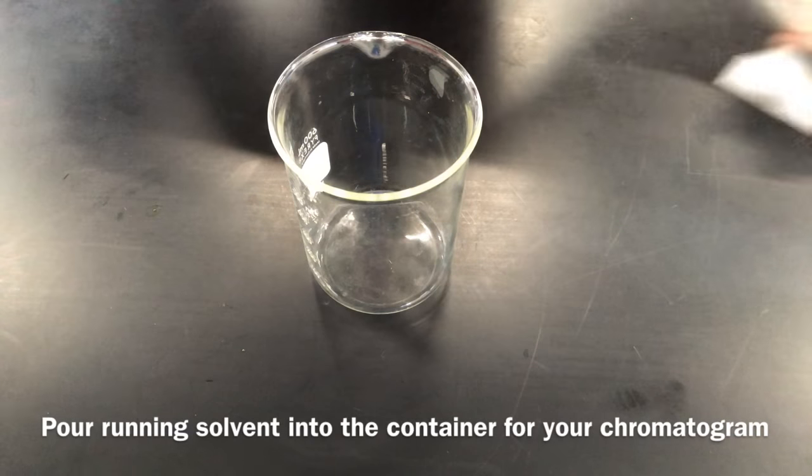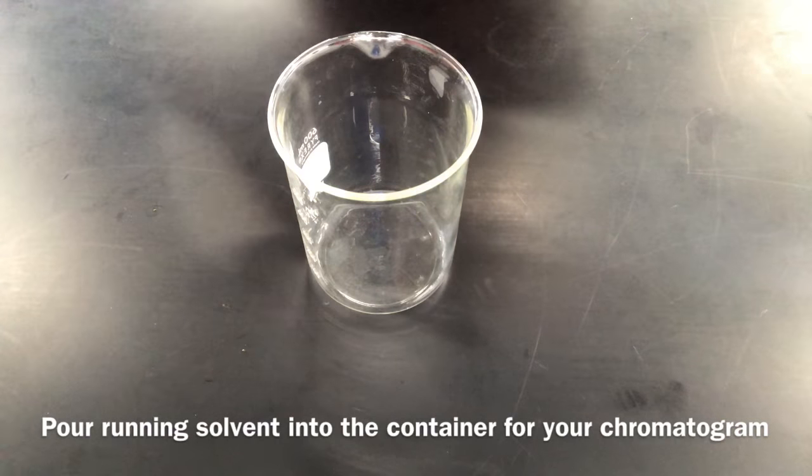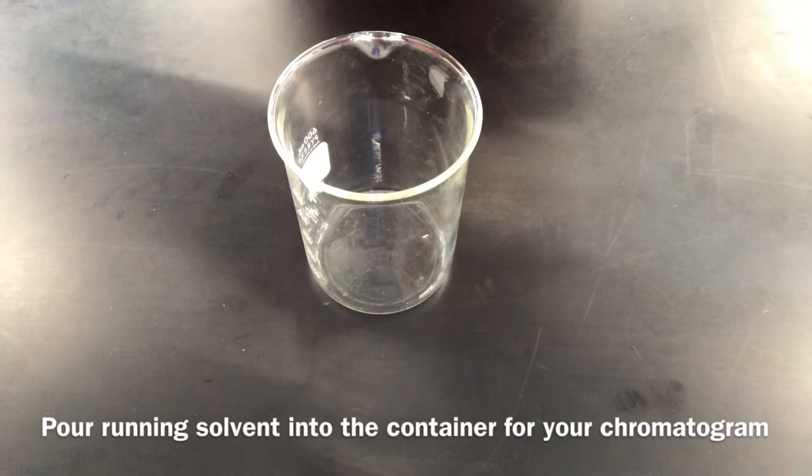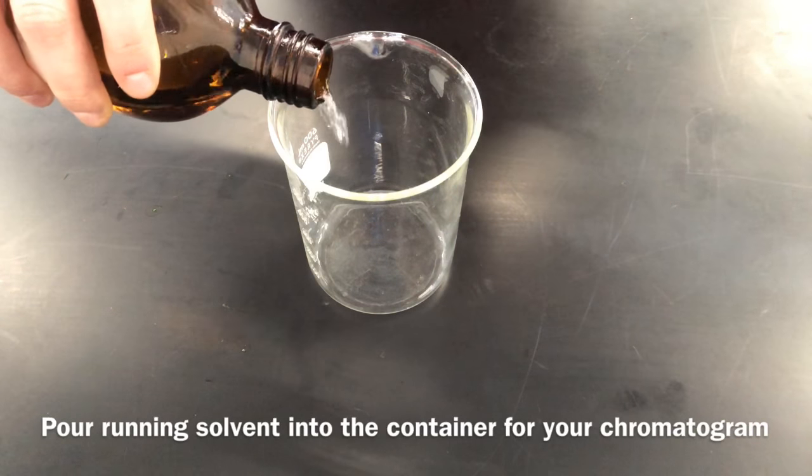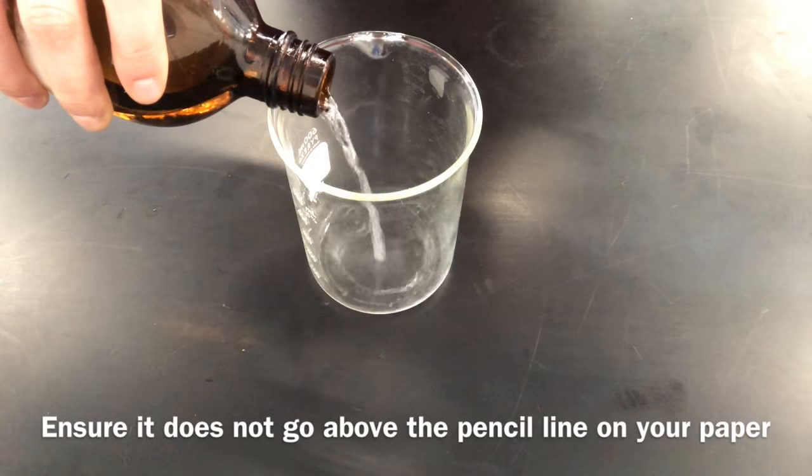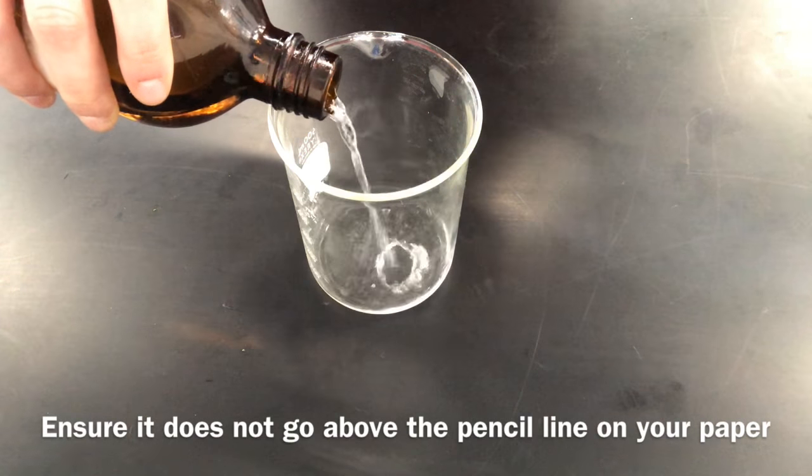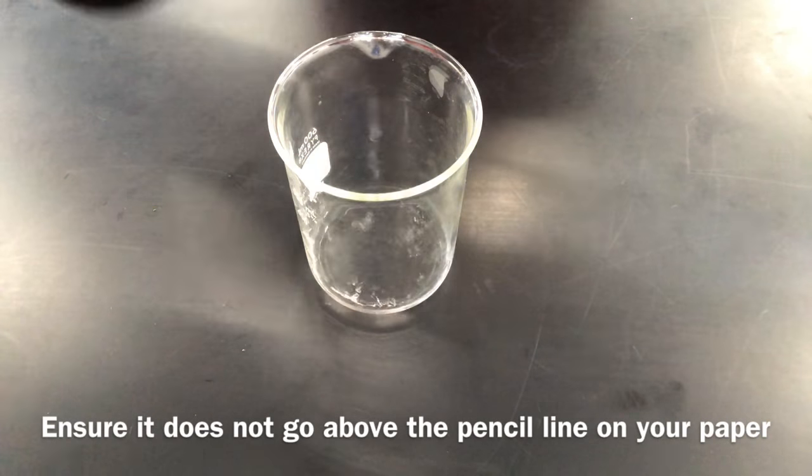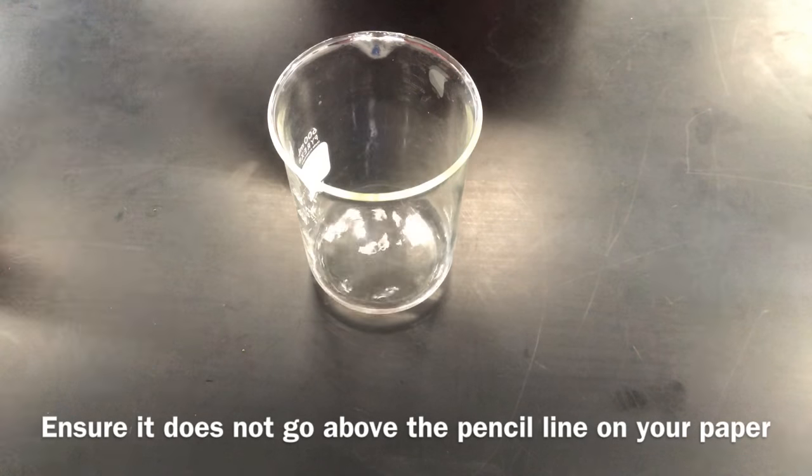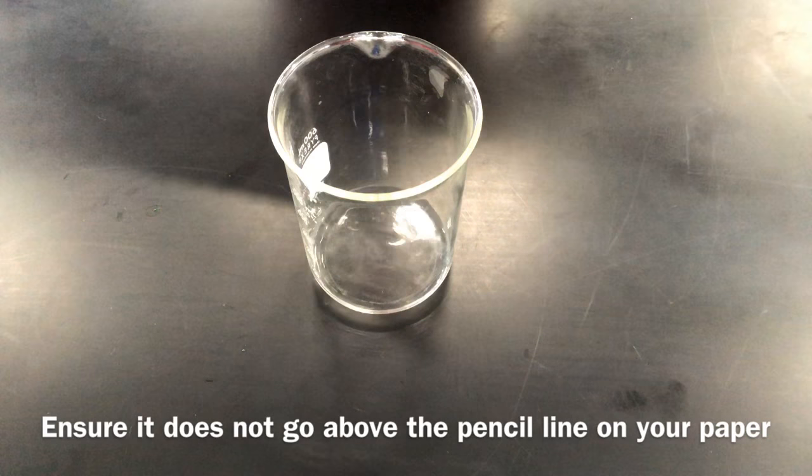The next step is to prepare your running solvent. So you're going to take the container in which you will place your chromatogram, and you're going to pour your running solvent into the container, ensuring that it does not go above where the pencil line is on your paper. So in our case, that would be not above two centimeters from the bottom of the container. Now, there are a variety of different running solvents that people tend to use. One of the most frequent is nine parts petroleum ether to one part acetone. But it is possible that your teacher might give you a different running solvent to use.